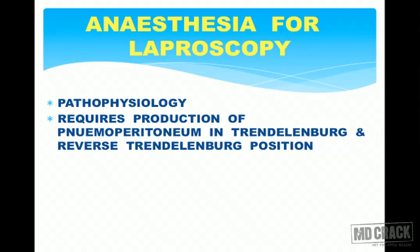Laparoscopic surgeries require production of pneumoperitoneum — that is, insufflating the abdominal cavity with gas. It can be done in Trendelenburg or reverse Trendelenburg position. It is due to this pneumoperitoneum, which is the mainstay for laparoscopic surgeries, that various physiological changes take place in the body, and the anesthetist has to take these changes into account and give anesthesia appropriately to avoid complications.